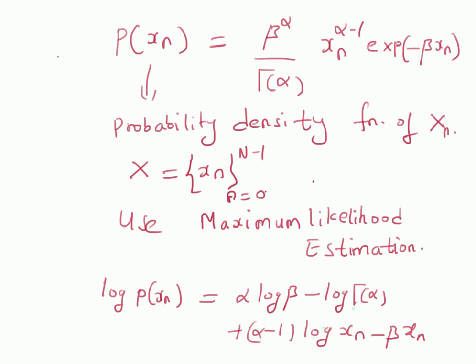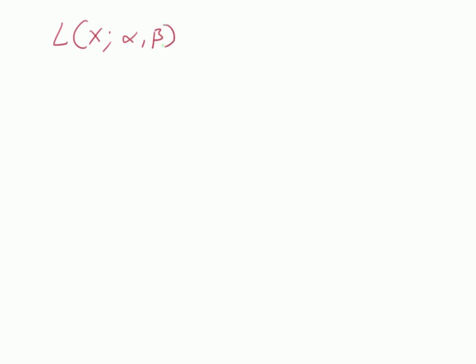Now we have to construct the log-likelihood function. That is, the function L(x; alpha, beta) is defined as the sum of the logarithms of the probability density functions of the individual variables. Here we are assuming that the random values x_n are independent of each other, so the log of the joint distribution equals the sum of the individual log PDFs. L(x) is called the log-likelihood function.